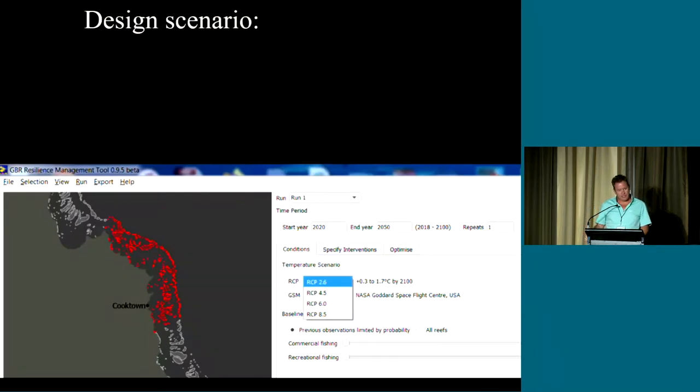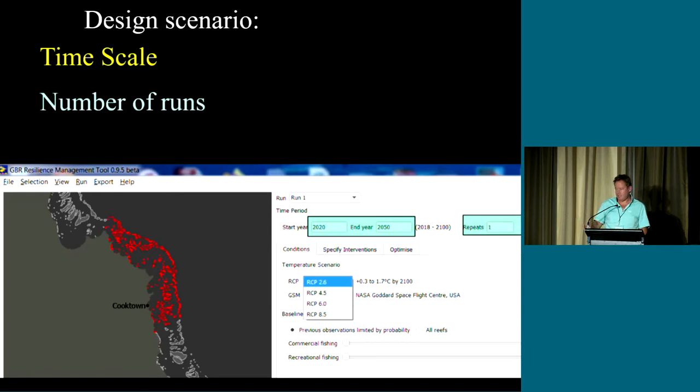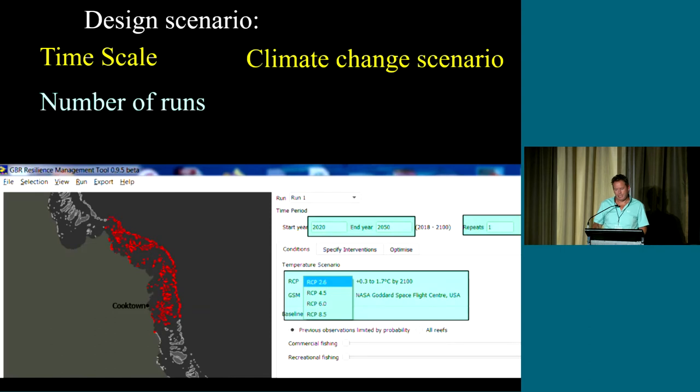You then create a design scenario and the sorts of things that that allows you to do is first of all set what's your time scale of interest. It might be for example 2020 to 2050. That allows you to set how many runs you want to look at. We might just start with one. You can pick the climate change scenario that we're following. We have models in there that you can select from for each of the major emission scenarios that the world is facing.